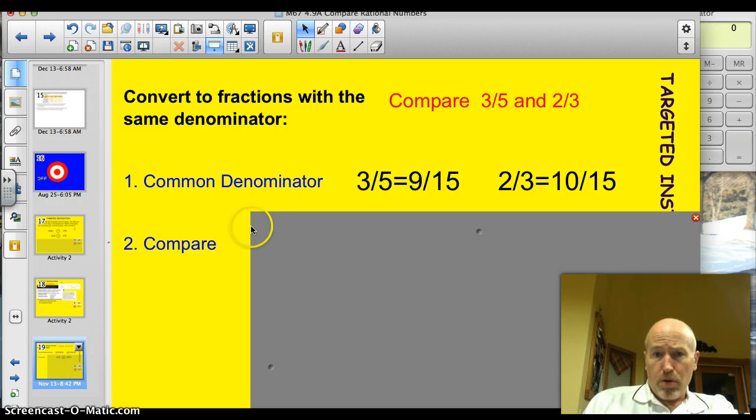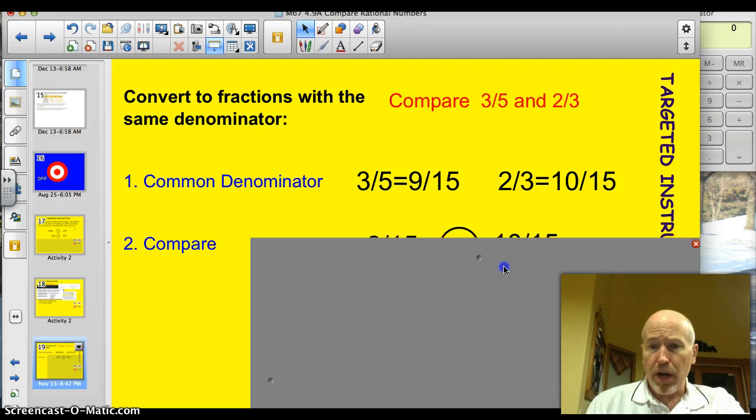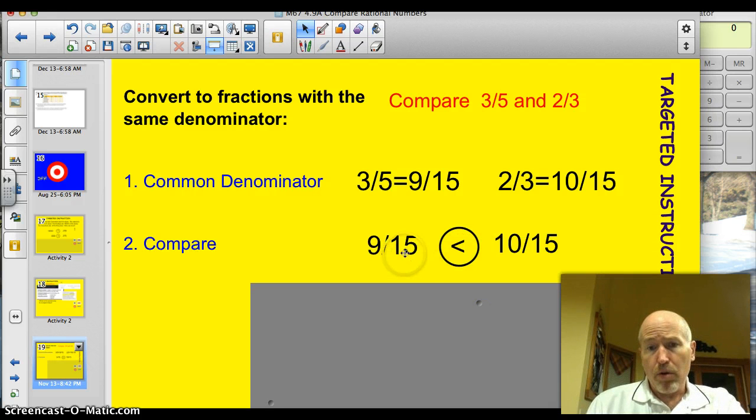Here's the traditional approach when dealing with fractions. You take and convert to a common denominator. So, we have to compare 3 fifths and 2 thirds. Well, 3 fifths, if we use 15 as a common denominator, 3 fifths becomes 9 fifteenths. That's an equivalent fraction. 2 thirds becomes 10 fifteenths, which is an equivalent fraction. We know, of course, that 9 fifteenths is less than 10 fifteenths. That works fine.